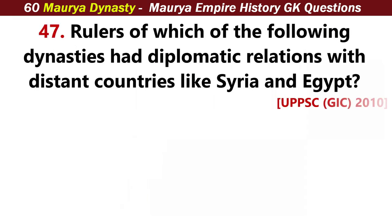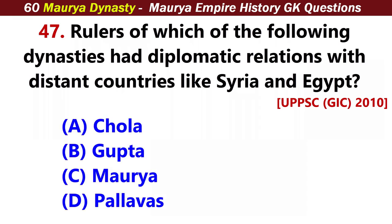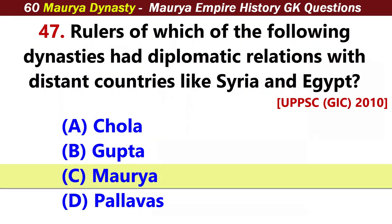Rulers of which of the following dynasties had diplomatic relations with distant countries like Syria and Egypt? Answer C: Maurya.